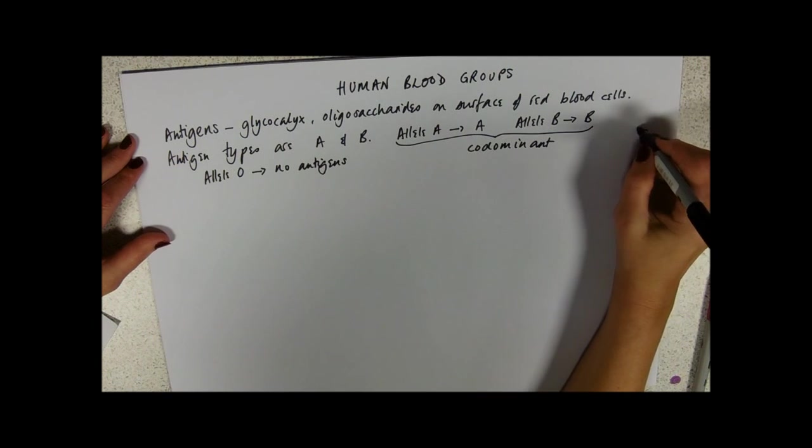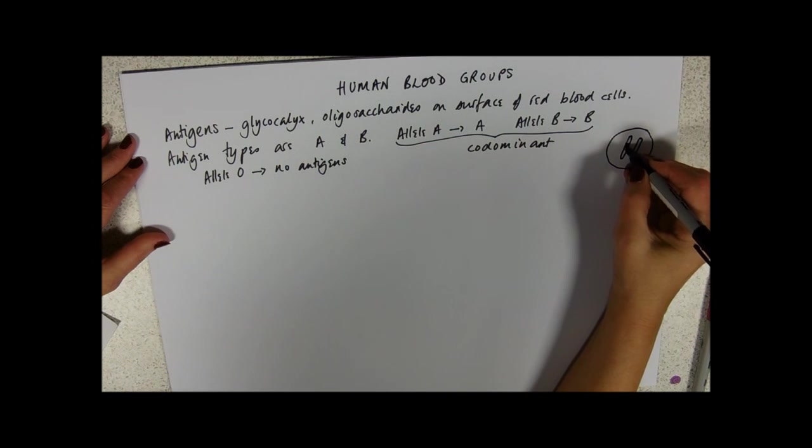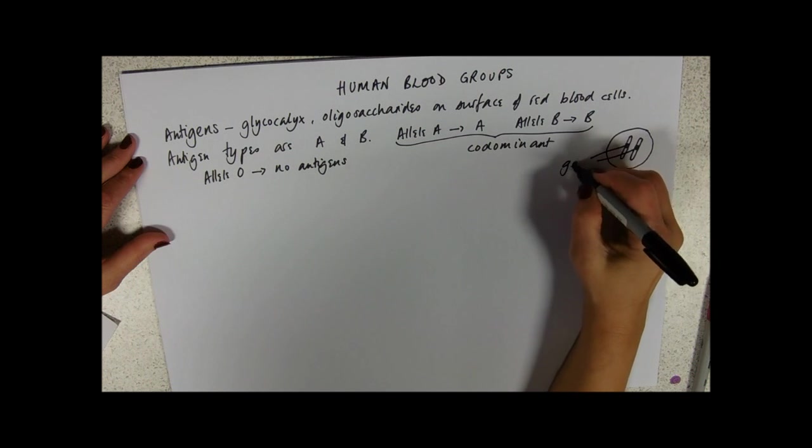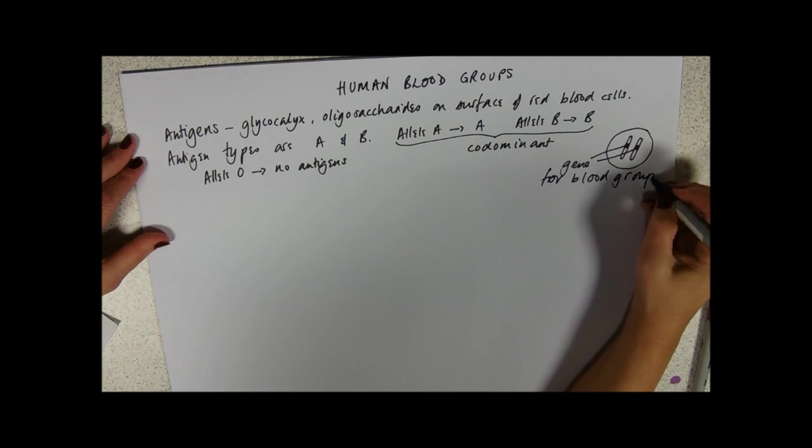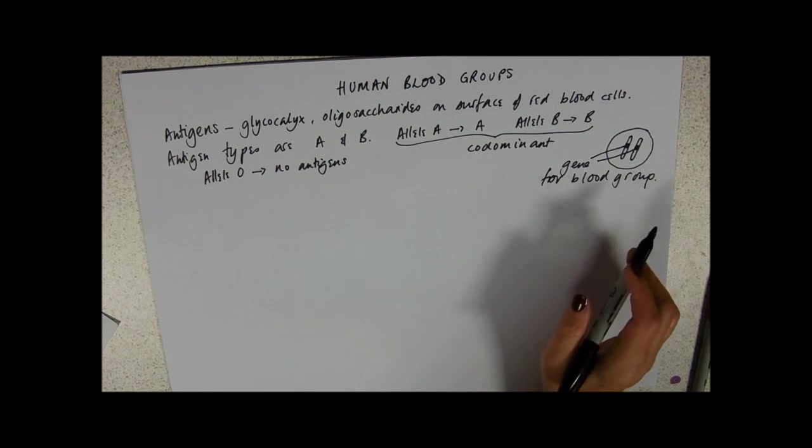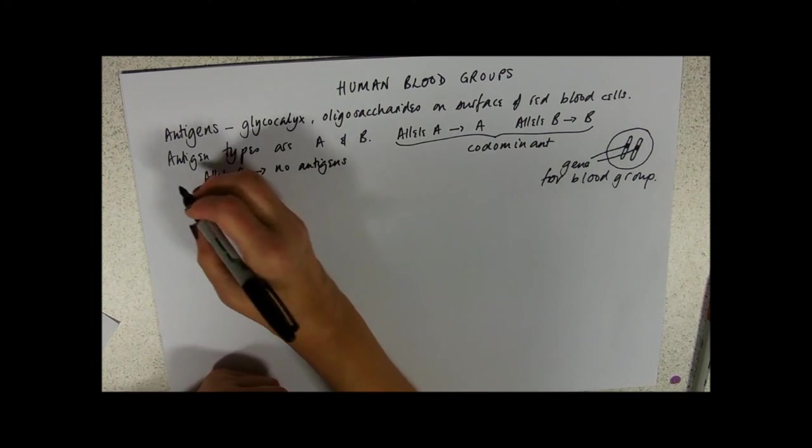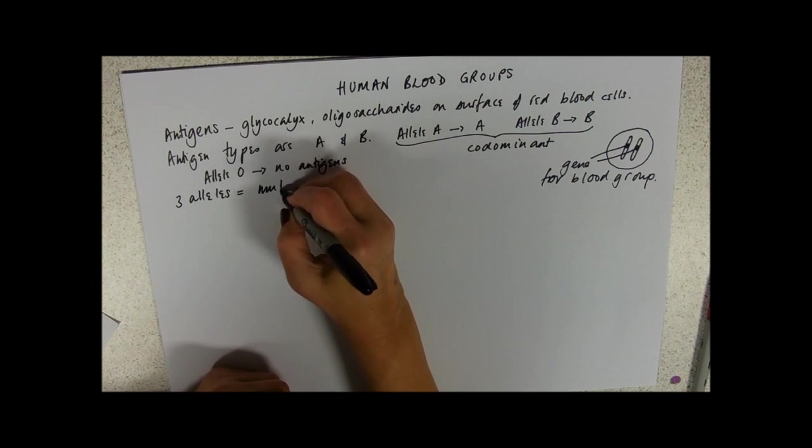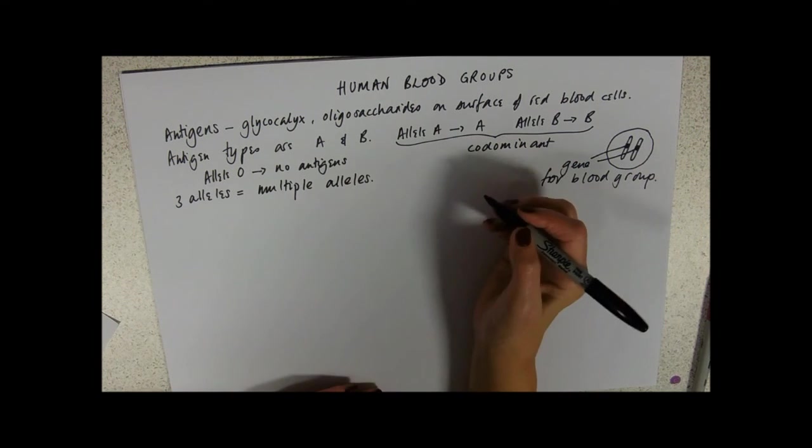Now remember that in a cell you have a homologous pair of chromosomes. And what we're saying is, okay, on each of these we have a gene for blood group. So you can only have one gene at a time. Now often in multiple alleles, so this is, we've got three here. So that's three alleles. It's called multiple alleles.